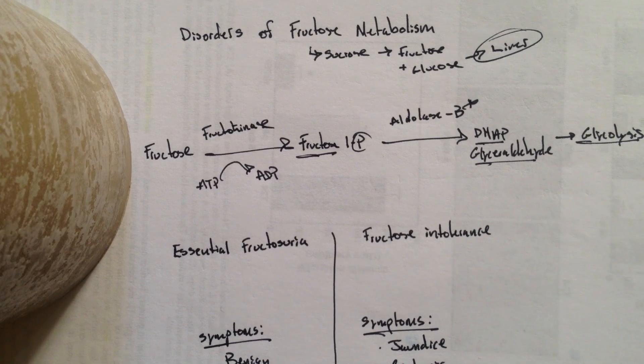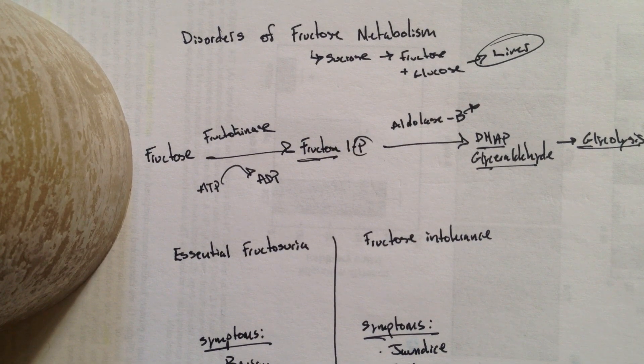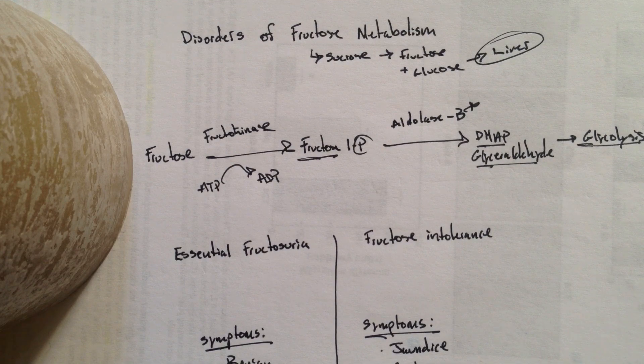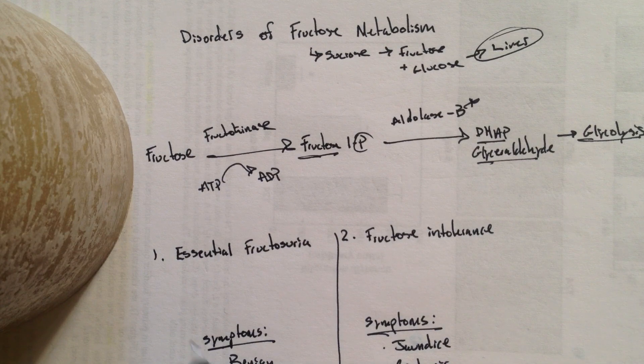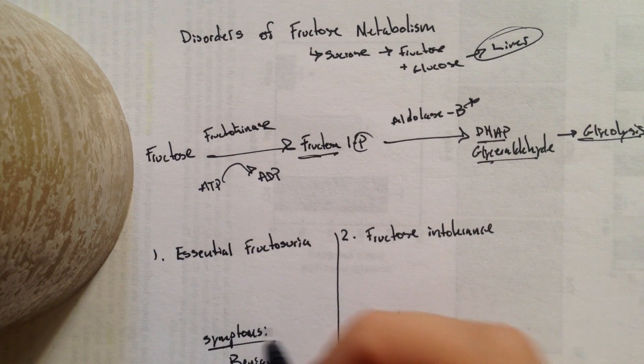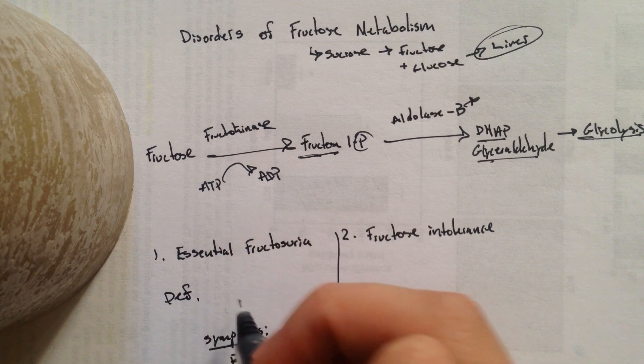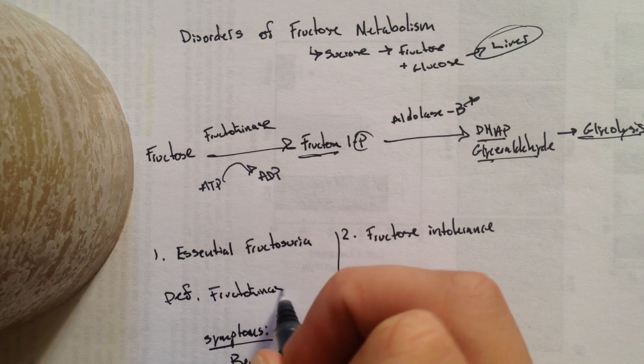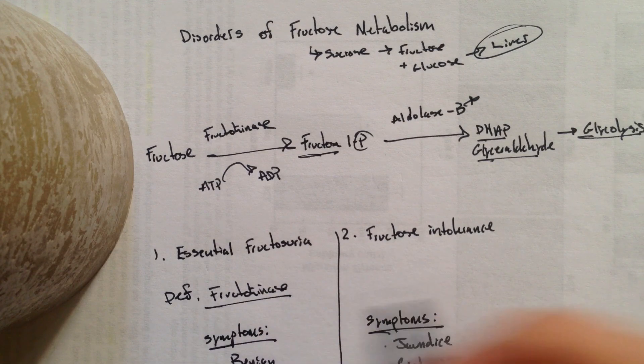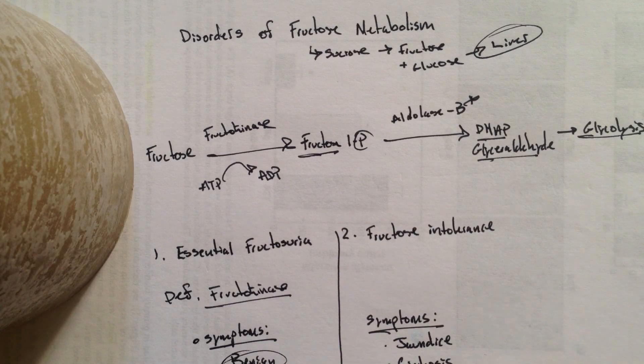So that's the pathway of fructose. That's fructose metabolism. So two disorders that can come about from this is either essential fructosuria or two, fructose intolerance. So if you have essential fructosuria, basically you have a deficiency, you're deficient in fructokinase. So if you're deficient in fructokinase, really, you're not going to have too many symptoms. You're going to be pretty much benign.